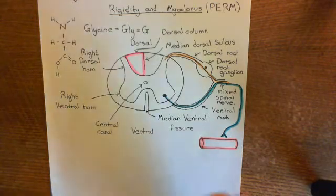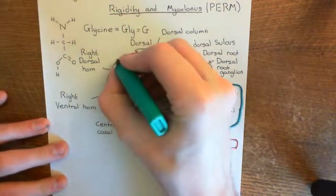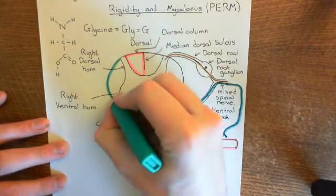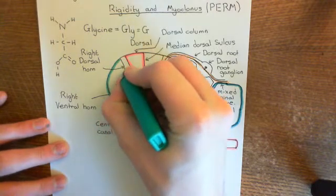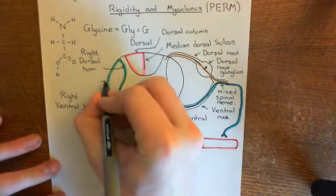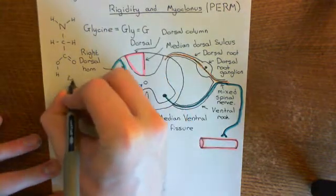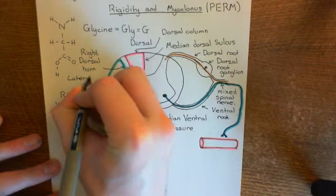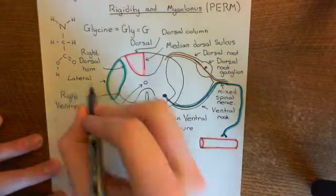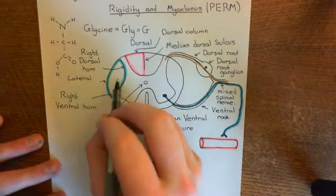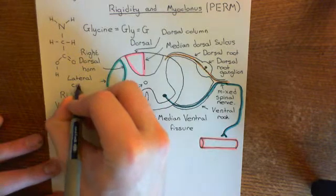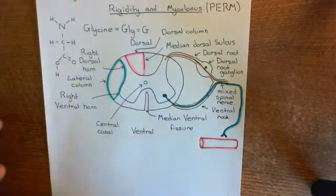There's another white matter column here in turquoise, and again you have its mirror image on the other side. This is the lateral white matter column, the lateral column. This carries sensory fibres up to the brain, but it also carries motor fibres which are coming down from the brain. For instance, there's a large portion of the corticospinal tract running in the lateral column.